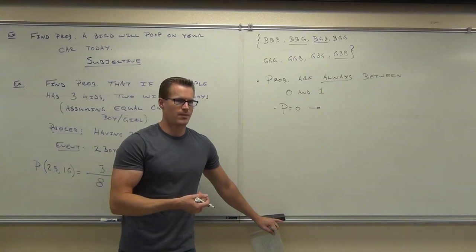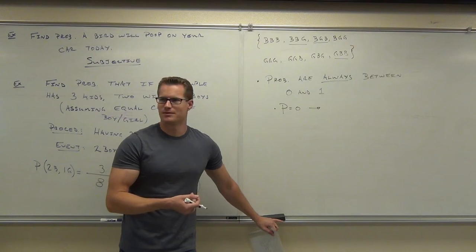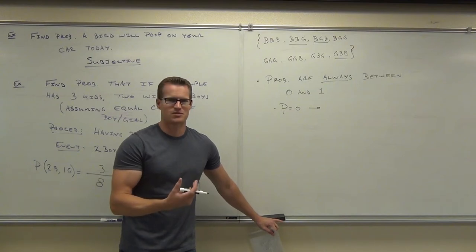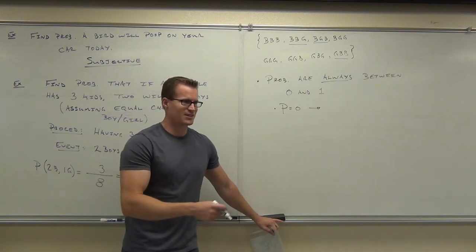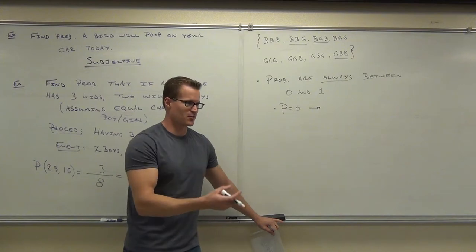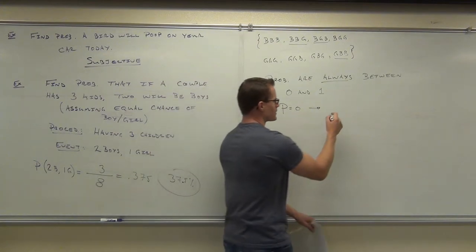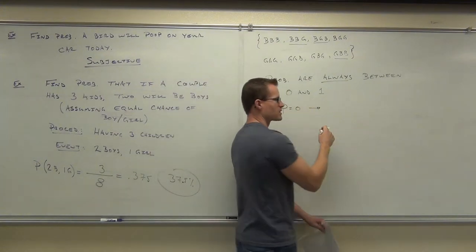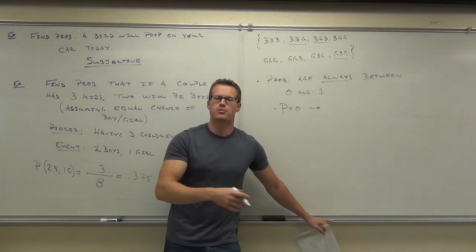The probability of rolling a die and getting a rabbit — that's not going to happen. I'm not a magician, I am a musician. You can't just make a rabbit appear from a dice, right? It doesn't make sense. So something that cannot happen is an impossible event.